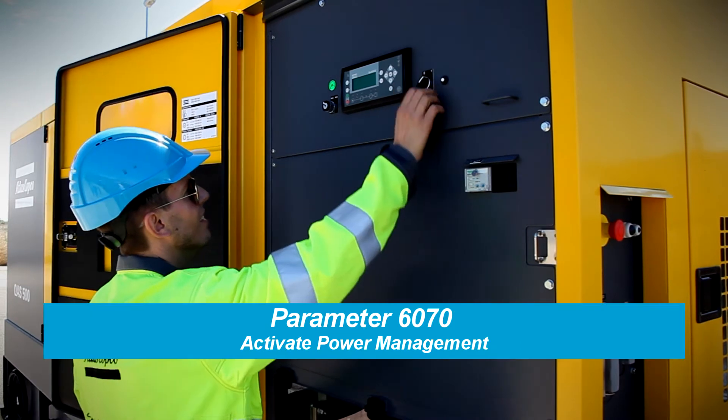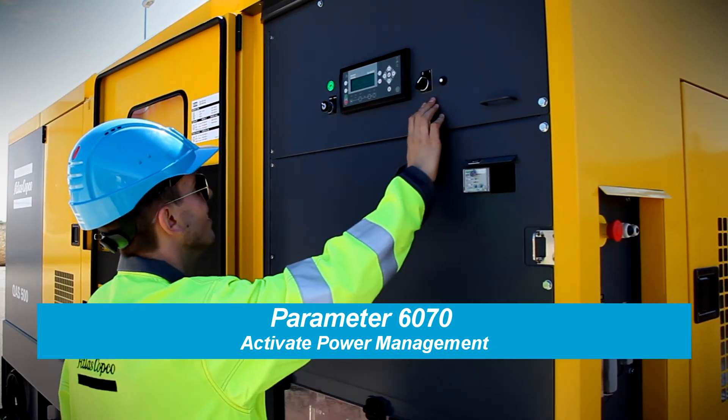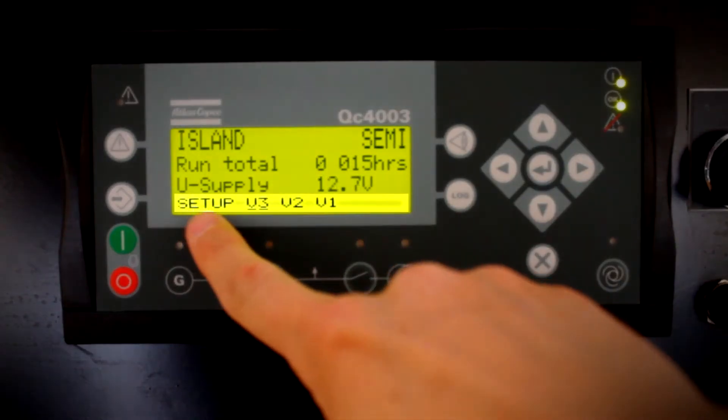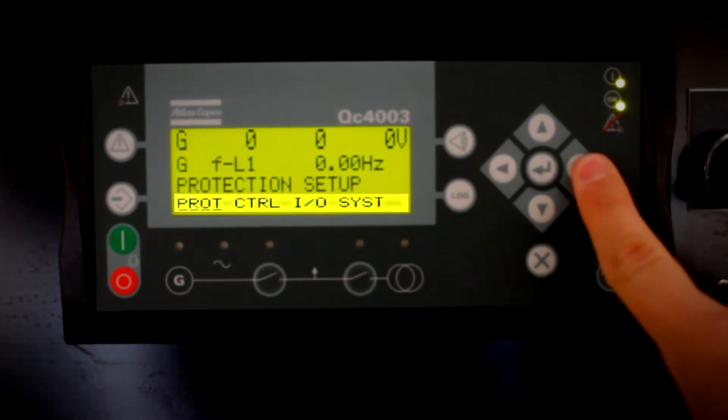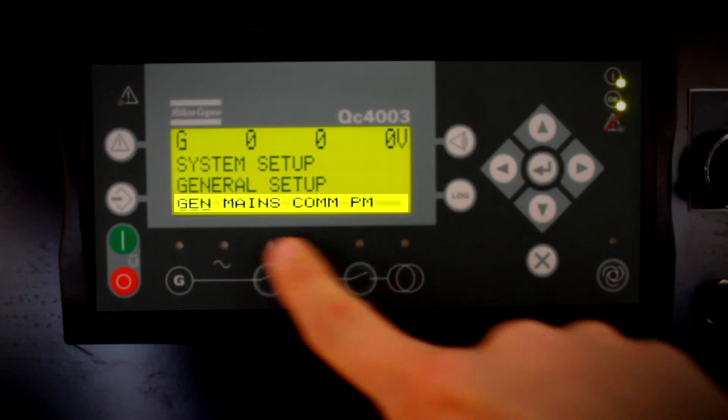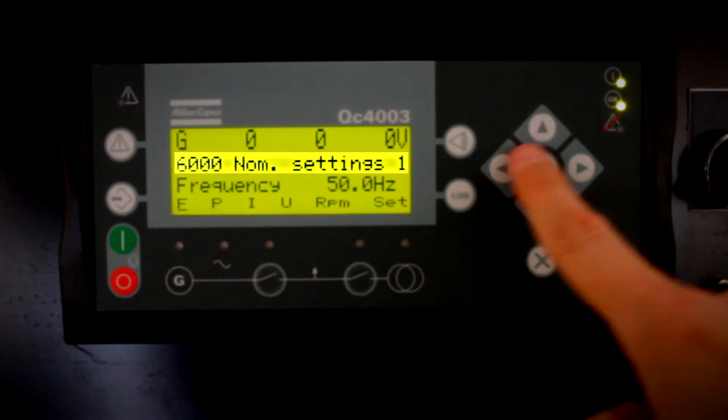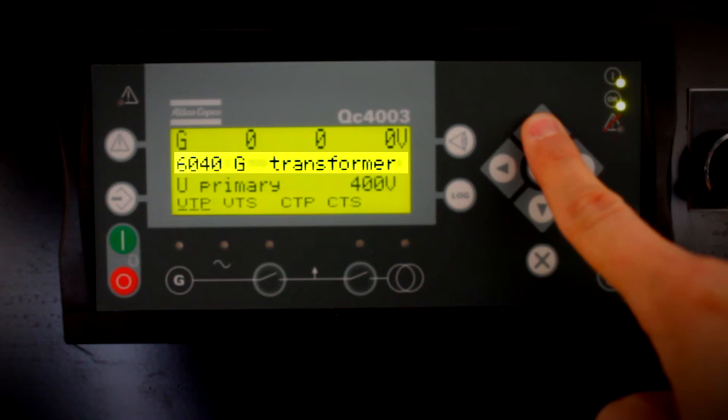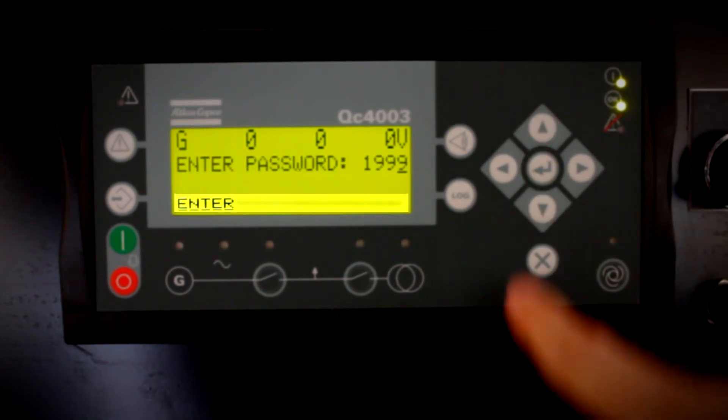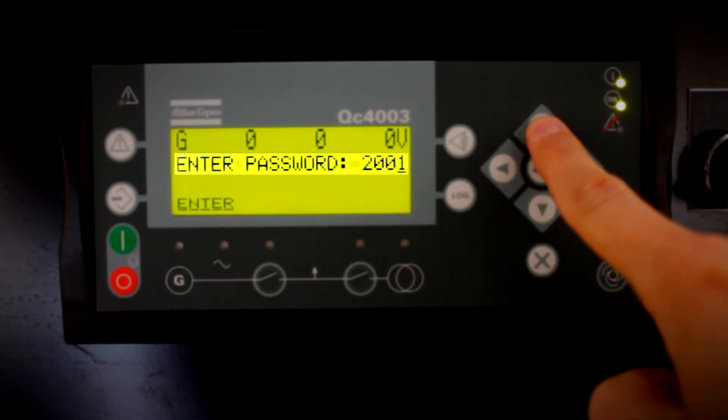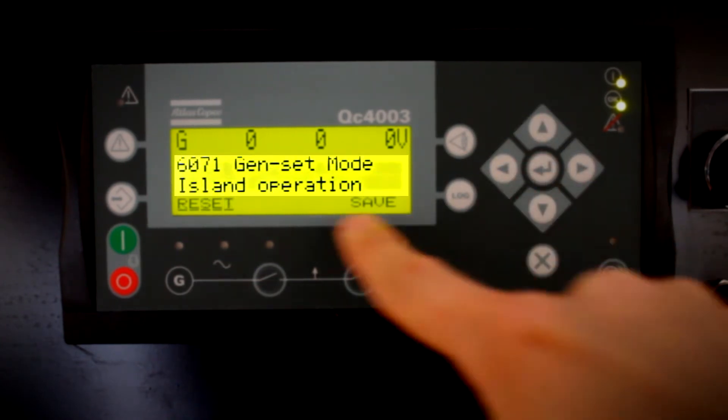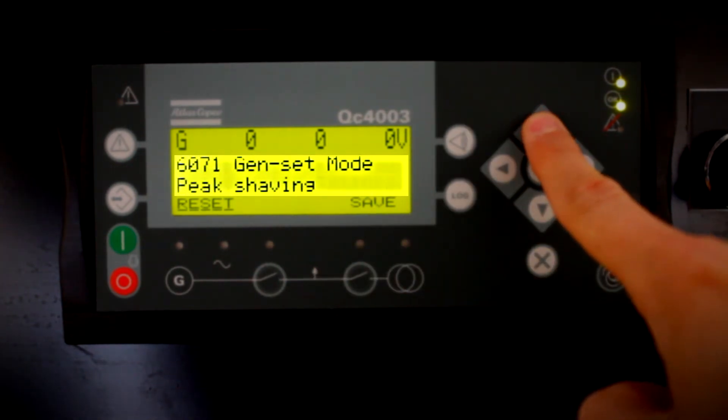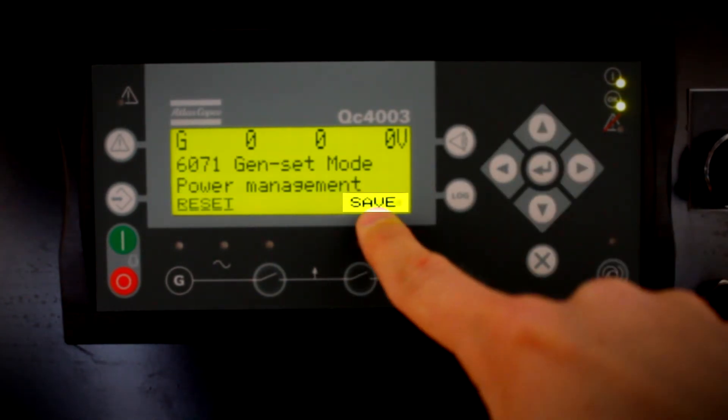Activate Power Management at parameter 6070. Just go through the menu by Setup, System, General. Scroll until you find parameter 6070. Enter the customer password. Scroll again until you get Power Management and save. Good.